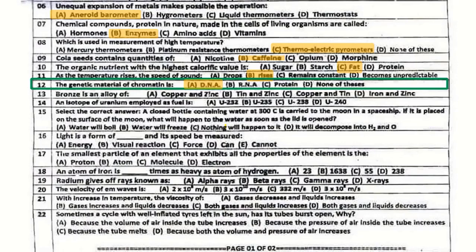The genetic material is DNA — Deoxyribonucleic acid. Question number 13: Bronze is an alloy of what? Bronze is an alloy of iron and zinc.